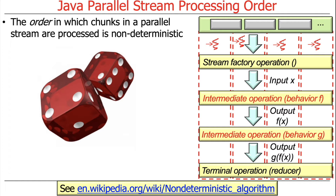What does it mean to be non-deterministic? It means that an external viewer wouldn't know ahead of time how things were implemented unless they knew how the black box of scheduling and processor core allocation was done — so it would appear random, though it's not really random, just non-deterministic. You can look up more about non-determinism. That's actually one of the great benefits of parallelism — non-determinism.